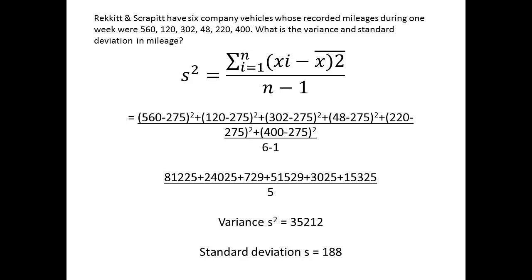To find the variance, we take the sum of (Xi - X̄)² and divided by N minus 1. This gives us a figure of 35212 for the variance. The deviation S will be the root of this number, which is 188.